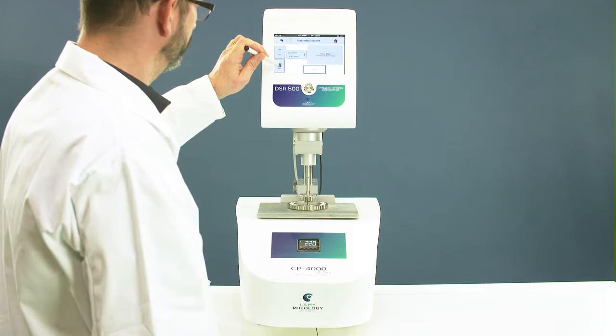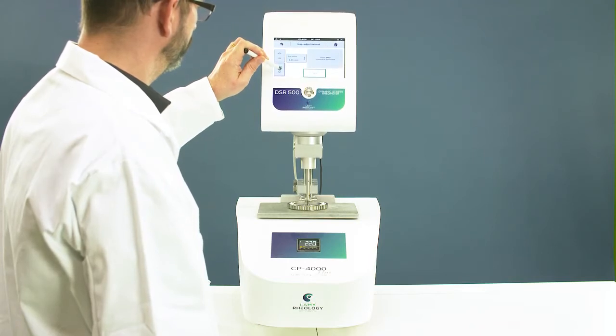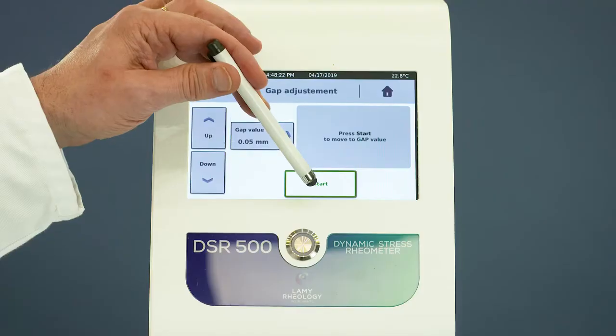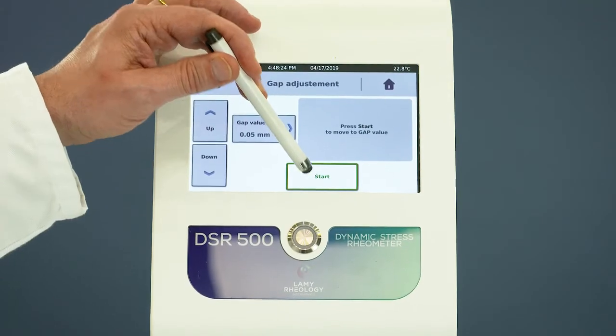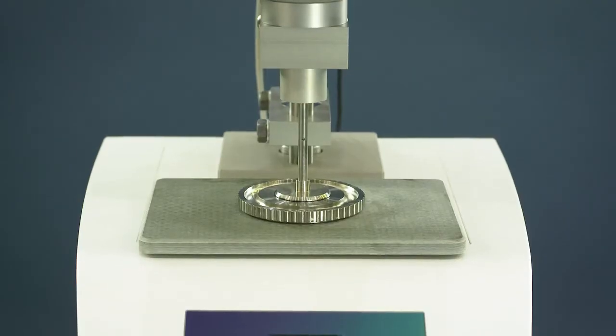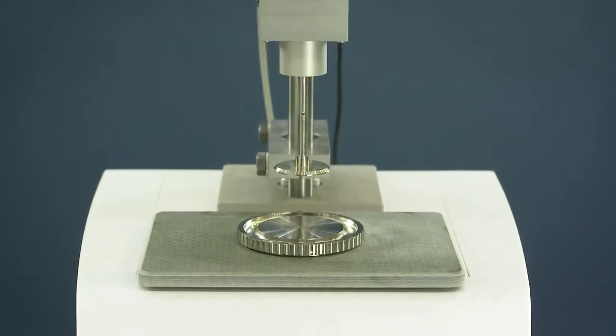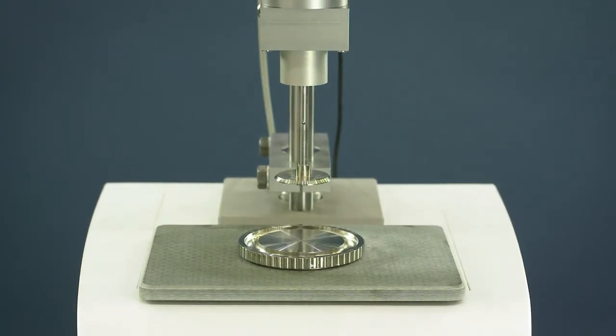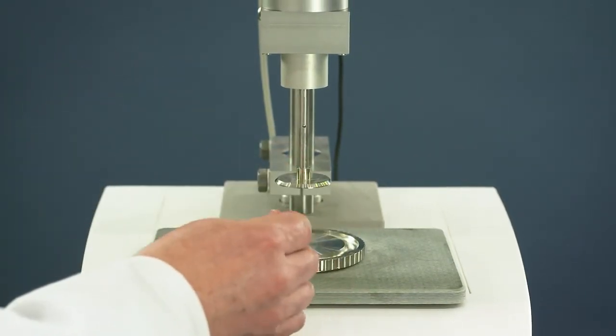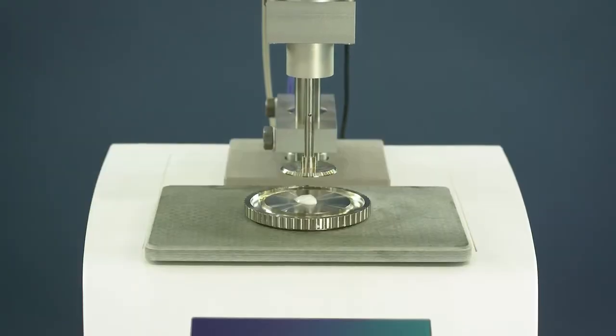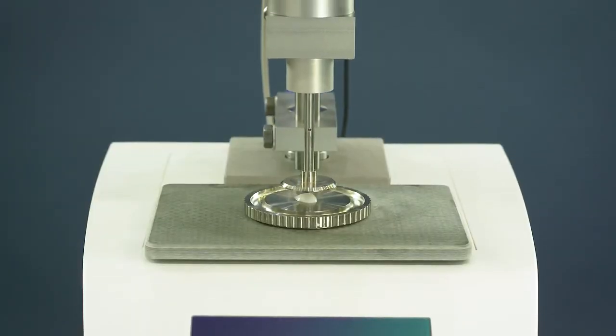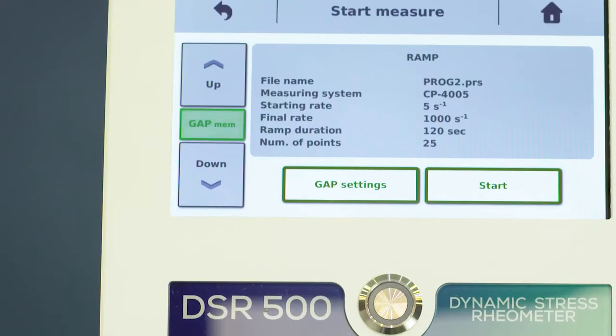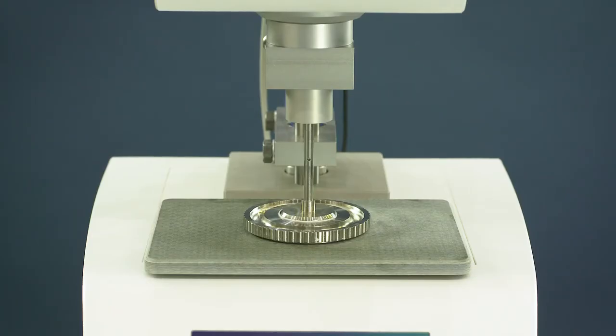Move down the head closer to the bottom plate and click start to set the zero gap. Move up the head with the lift functions and place your sample. Move down the head closer to the sample and click the gap mem function to reach the measuring position.